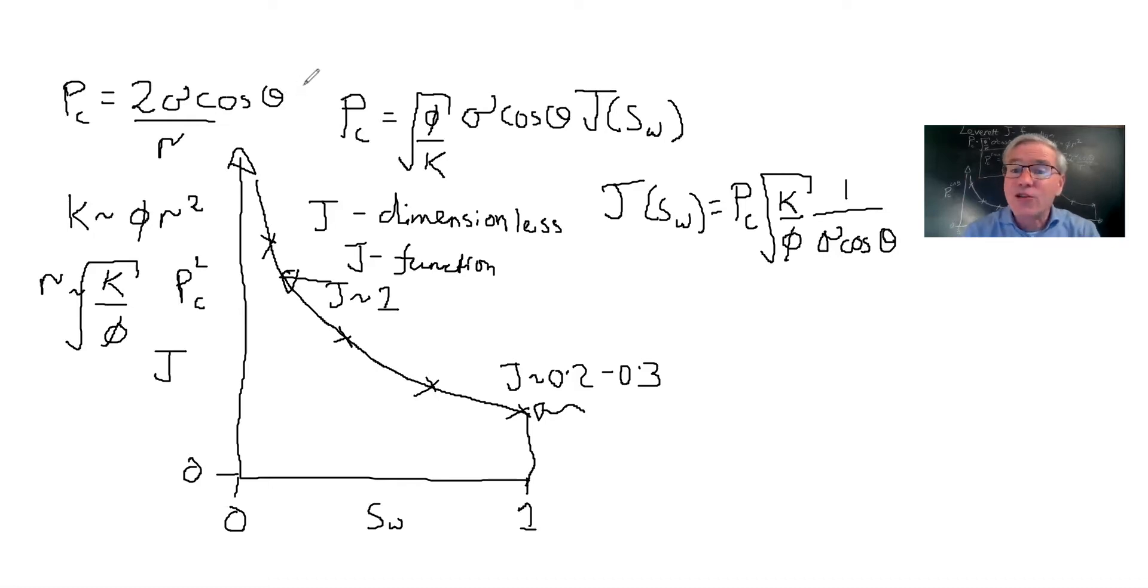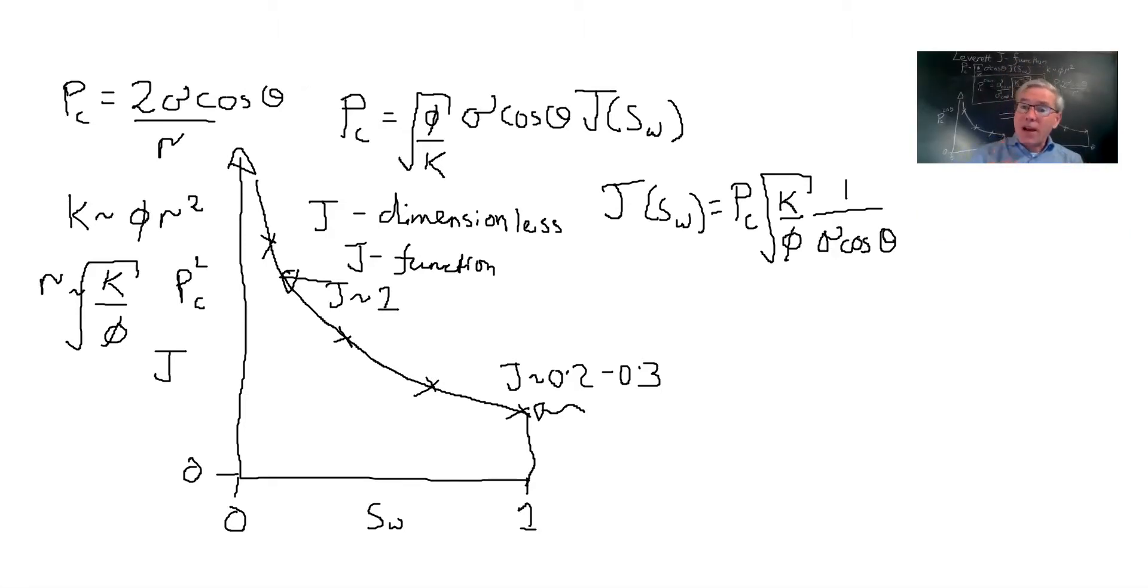But typically J is of order 1. But how do we make sense of that in terms of the practical application? What I want is I want to find capillary pressure in the field, PC_F versus S_W, on a rock that we assume is of similar structure.